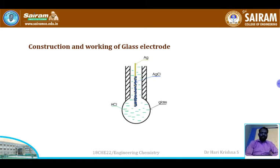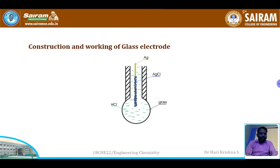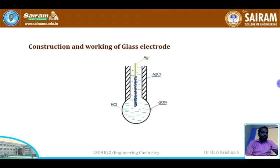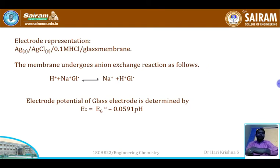However, in practice, even when the H+ ion concentration inside and outside the bulb are equal, some potential still exists across the bulb. This residual potential is called the asymmetric potential. The electrode is represented as: Ag | AgCl | 0.1 M HCl (inside bulb) | glass membrane.